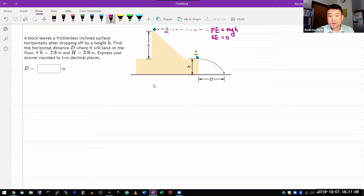What we are assuming is because it says it's a frictionless inclined surface, and reading through the rest of the question I get a sense that as this slides down all the way down here, energy is conserved.